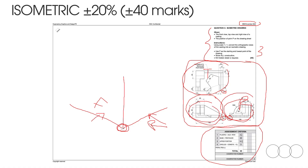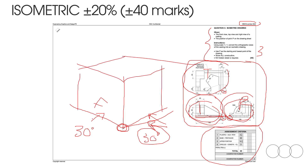When we do isometrical drawings, we use a 30-degree triangle for all our horizontal lines. All lines that run horizontally we now construct at 30 degrees. The vertical lines however stay vertical. An isometrical drawing we draw at 30 degrees. The drawings are usually on a scale of 1 to 1, but you must read to be certain. It's not to say that it is going to be 1 to 1 in your paper 2, so read through the question to make sure you adhere to everything and always refer back to the marking criteria.